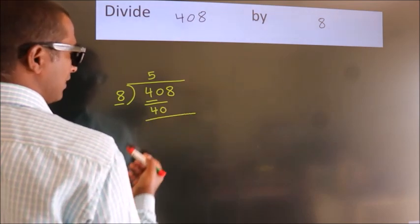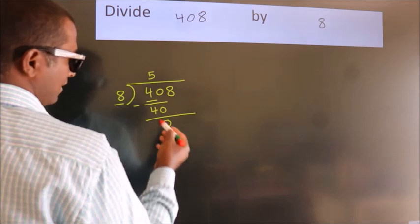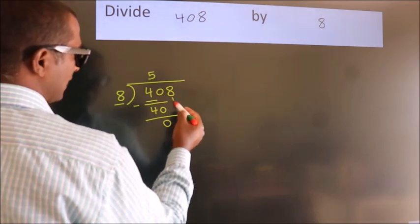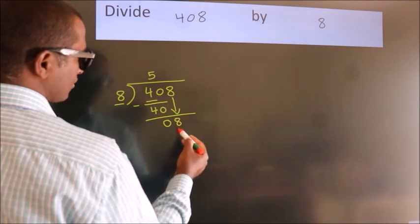Now we should subtract. We get 0. After this, bring down the beside number. So 8 down. So 8.